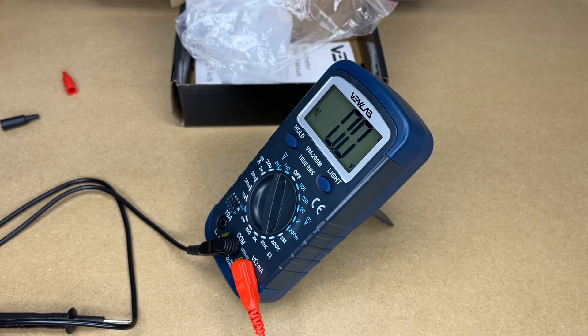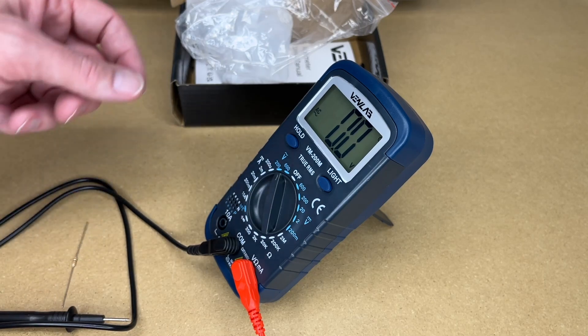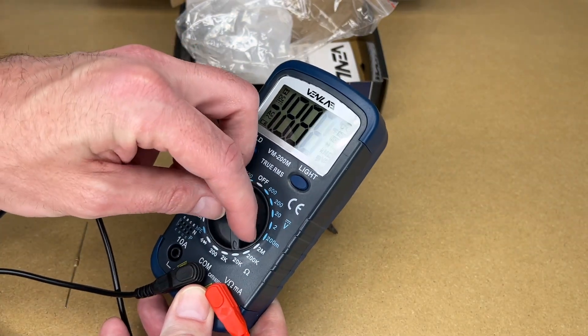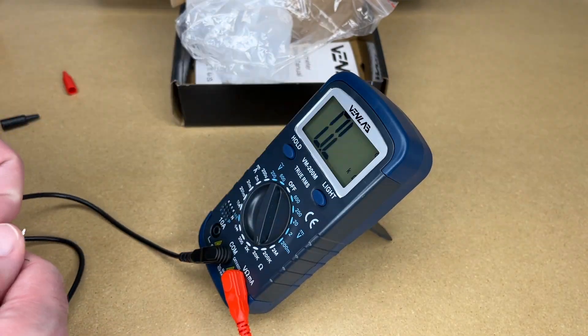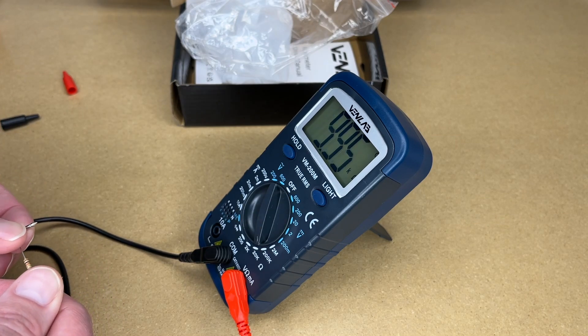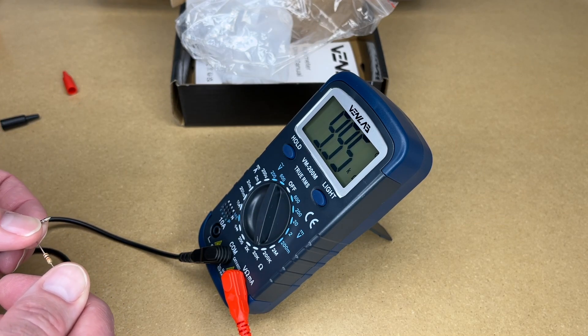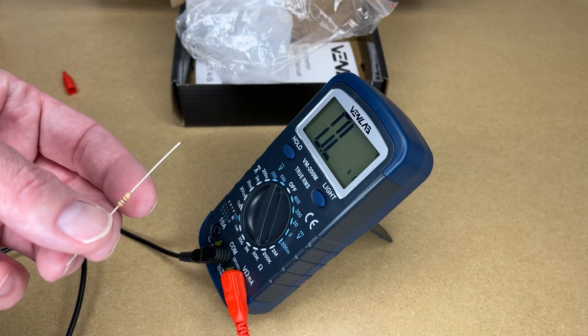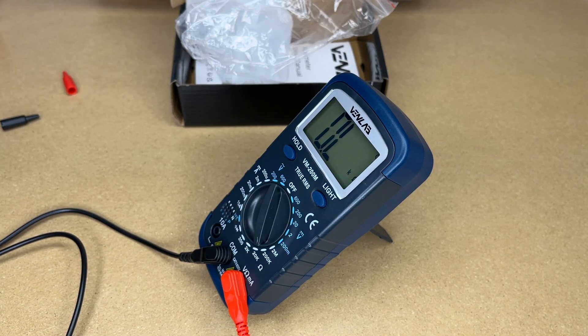I've got some other things I can measure here. I have a 10k resistor. We'll go here to 20k. And here we got 9.95k. So that's within the tolerance of the resistor. That would be a correct value.